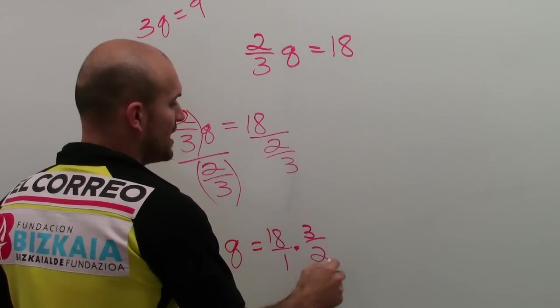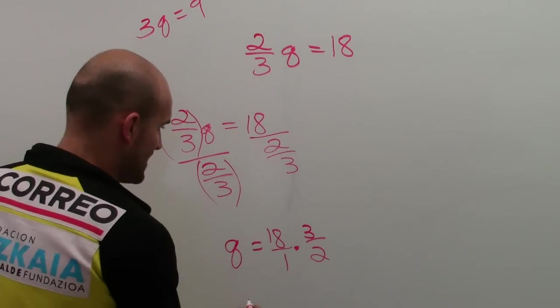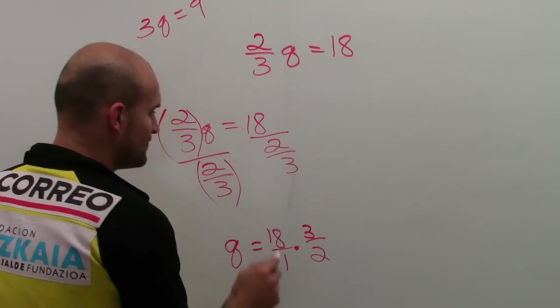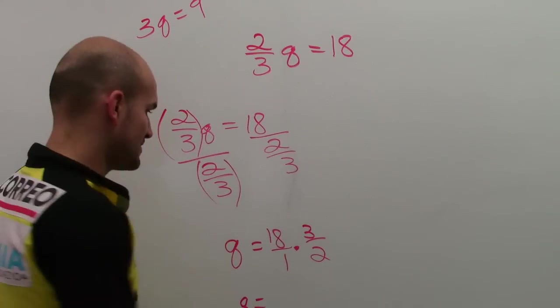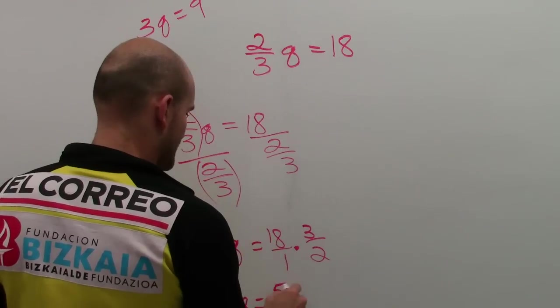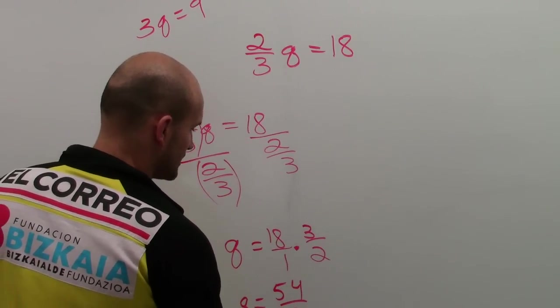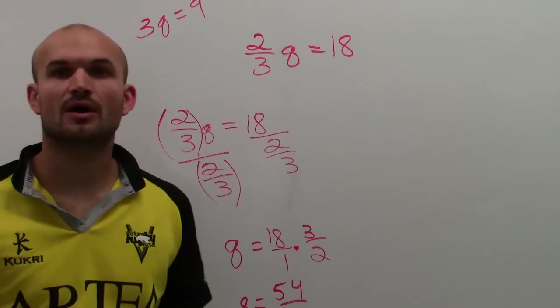So now my final answer is going to be q equals 18 times 3, which is let's see, we got 36, so we're gonna have 54 divided by 2. Q equals 27. Very good.